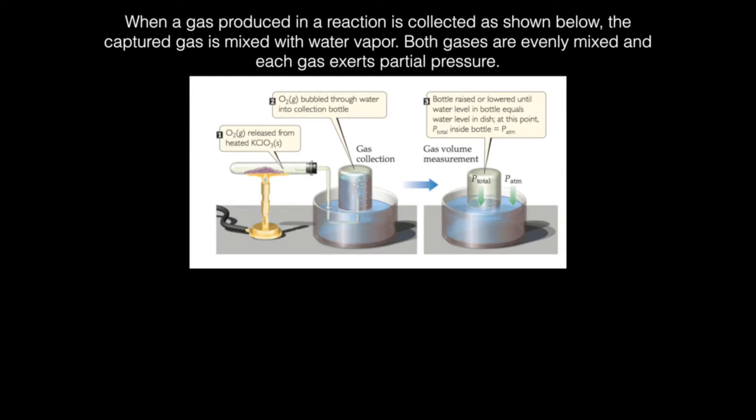The interesting thing is that both gases are going to mix evenly and both gases are going to exert a partial pressure. And so this helps us in the fact that we can use Dalton's law of partial pressures in order to determine the pressure of just the gas that is produced.